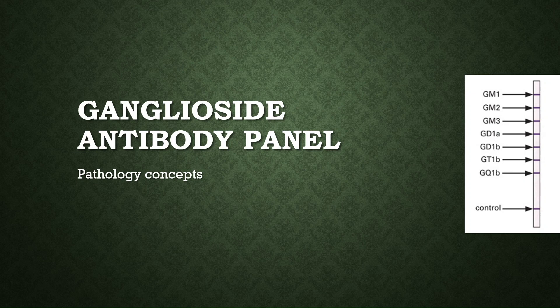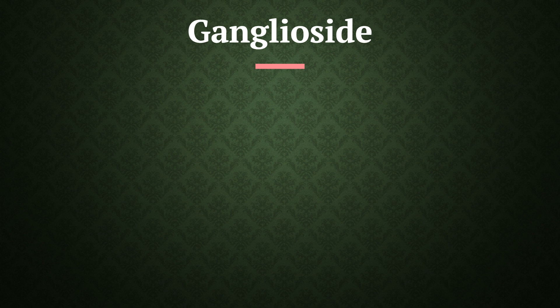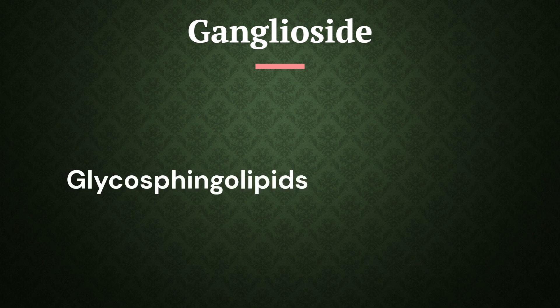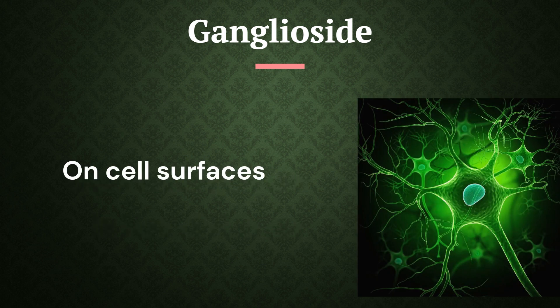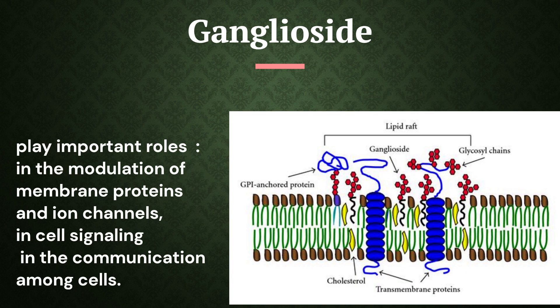Hello and welcome everyone. Today our topic of discussion is the ganglioside antibody panel. But first, let's understand what gangliosides are. Gangliosides are glycosphingolipids highly abundant in the nervous system. They are present and concentrated on cell surfaces, and enriched in cell membrane micro-domains also called lipid rafts, playing important roles in modulation of membrane proteins.